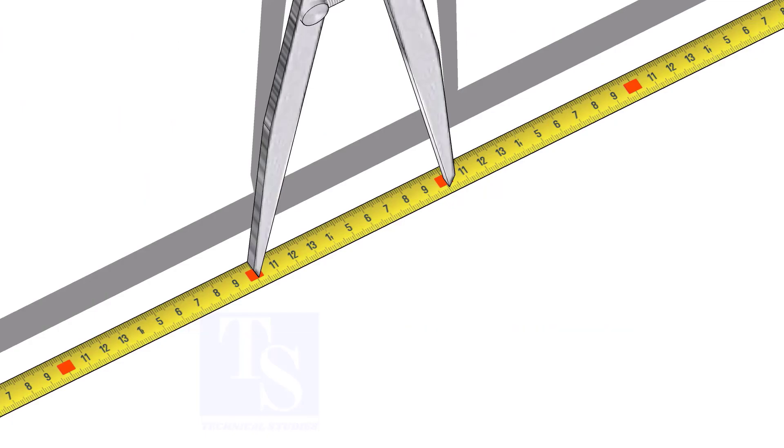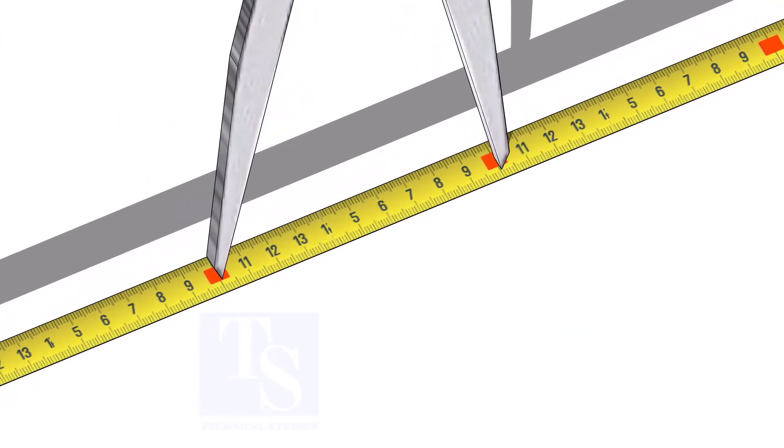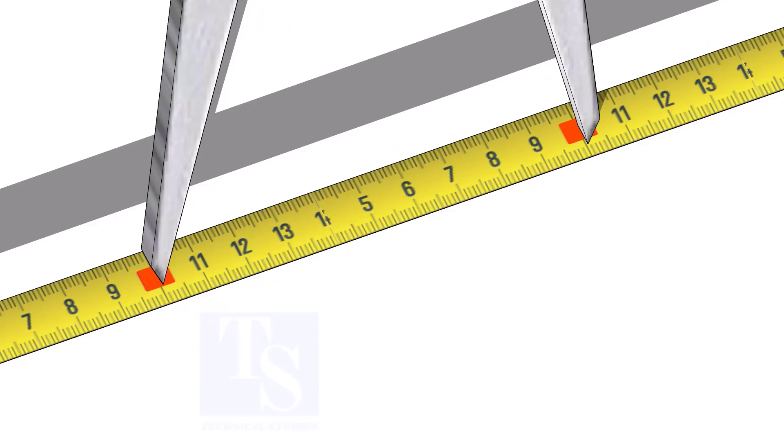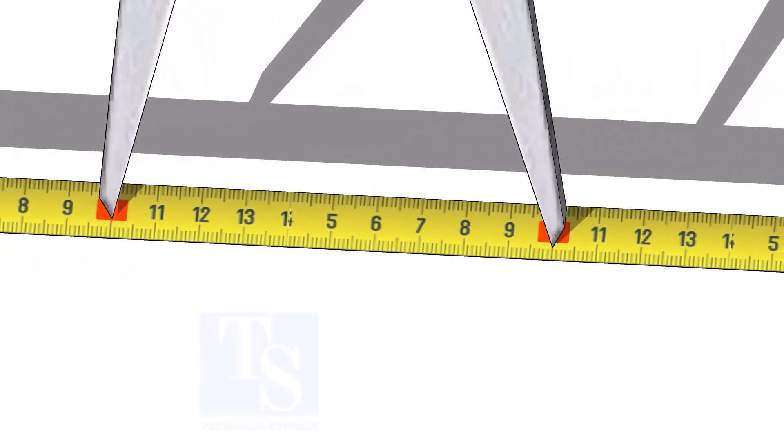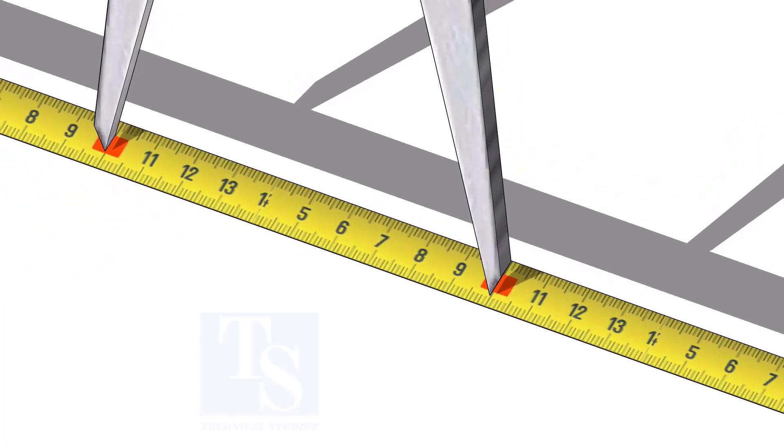Adjust the divider to 100 millimeters. Remember, this method is suitable for small diameter cones only. For large cones, you need to follow the cord length marking method.